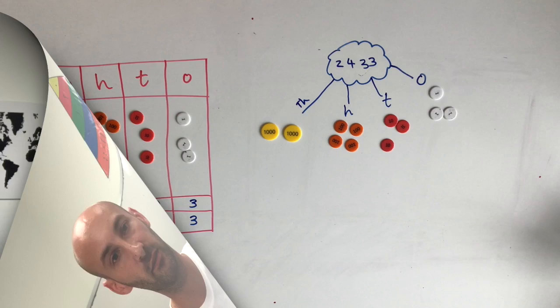Hi everybody, welcome back. Today we're going to have a look at some pictorial strategies for understanding the place value of each digit in a four-digit number, as well as how to read and write them.